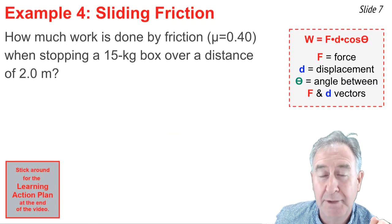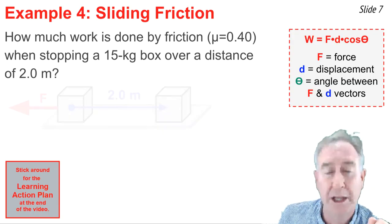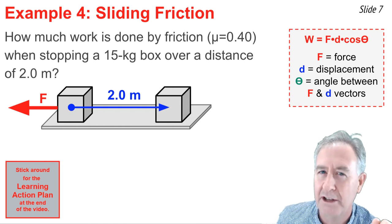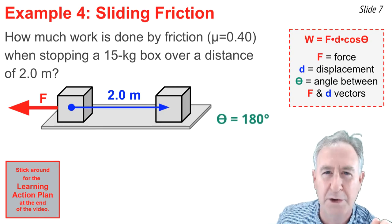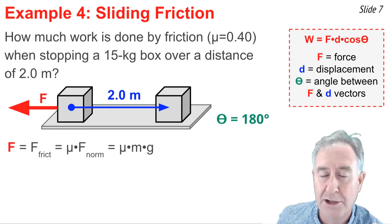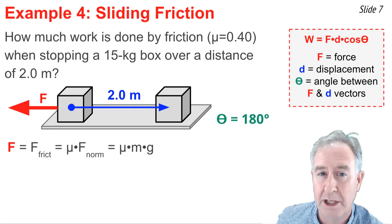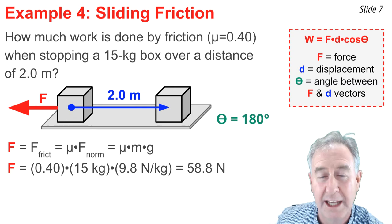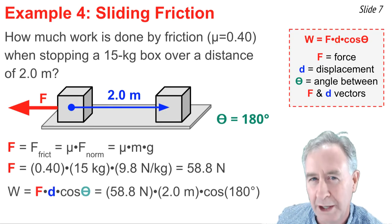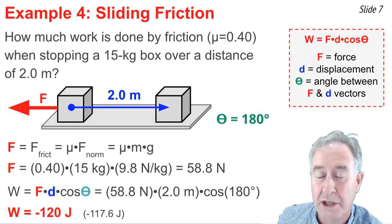The fourth example involves sliding friction. I want to know how much work is done by friction when stopping a 15-kilogram box as it slides to a stop over a distance of 2 meters. In the diagram, the displacement is 2 meters to the right, while friction acts opposite to the box — directed to the left. So the angle between the force and displacement vectors is 180 degrees, which is typically the case for sliding friction. The force of friction equals mu times the normal force, and for a box on a horizontal surface, the normal force equals the weight m times g. So friction equals 0.4 times 15 times 9.8, giving 58.8 newtons. Substituting into the work equation, the cosine of 180 degrees is negative 1, and the work done is negative 117.6 joules, or negative 120 joules rounded to two significant digits.